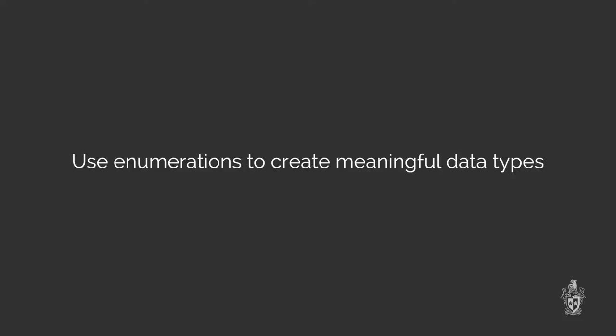Yes, where you have a list of options — say different kinds of instruments — you can actually create your own data type. Just like integer and string, we can create our own type. In this case it's called an enumeration. There are actually different kinds of types, and this is one of those kinds.